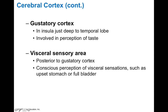The visceral sensory area is in the posterior gustatory cortex and is involved with conscious visceral sensations. Interestingly, the gustatory and visceral sensory areas are side by side in the brain, which explains why we associate bad tastes with gut feelings — saying things like 'this left a bad taste in my mouth' or 'that made my stomach upset.' Because these areas are also associated with learning, memory, and emotional centers, we often describe our emotions using tastes or gut sensations.